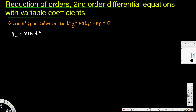The first thing is we have to find y prime and y double prime. We have y already, so we need to find y prime and substitute into the equation. For y prime we use the product rule because v is a function of t and t squared. Applying the product rule gives us t squared times v prime plus 2vt.